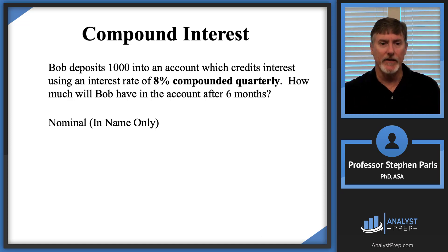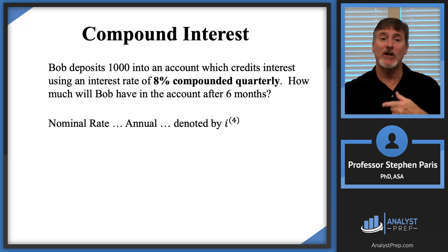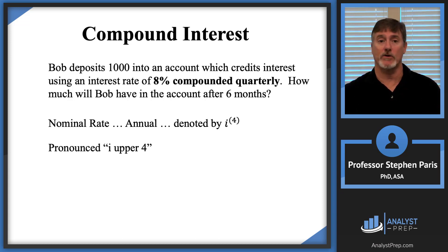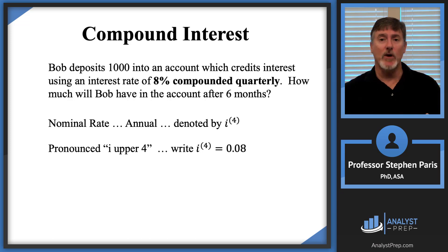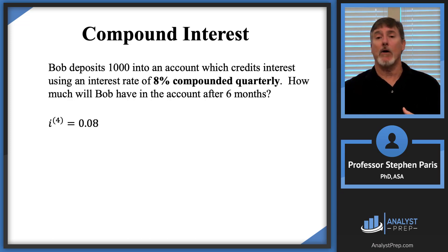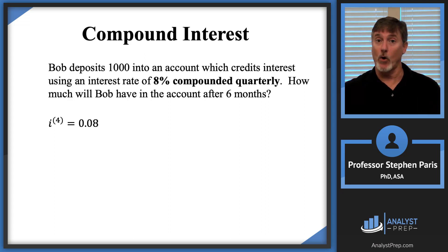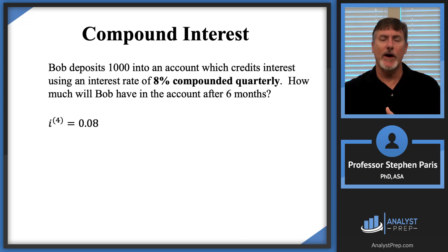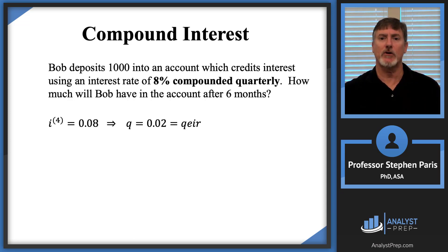Nominal means 'in name only.' It's an annual rate, and it's denoted by the symbol i^(4) — pronounced 'i upper 4.' So we write i^(4) = 0.08. The 8% is an annual rate, compounded quarterly — four times a year, which is why we use the superscript 4. To find the quarterly effective interest rate, we take 8% and divide by 4 to get 2% per quarter.